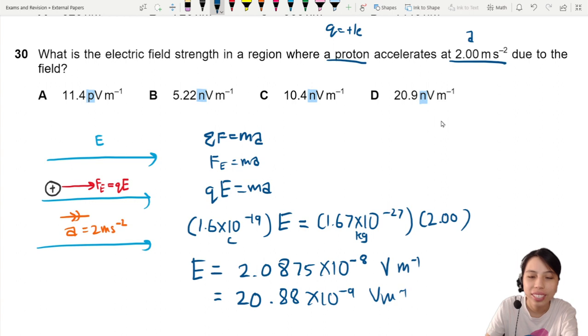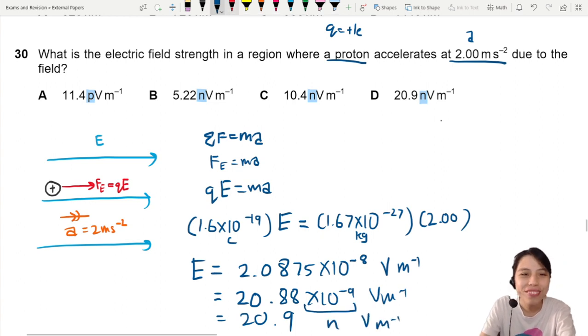There we have an answer already. This can be rounded to 20.9 times, just changing 10 to the negative 9 to nano. Nano volt per meter. Then we have our answer. The answer here will be D.